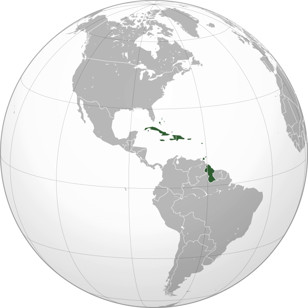Bermuda and the Turks and Caicos Islands, which are in the Atlantic Ocean, are associate members of the Caribbean Community. The Commonwealth of the Bahamas is also in the Atlantic and is a full member of the Caribbean Community. The organization called the Association of Caribbean States consists of almost every nation in the surrounding regions that lie on the Caribbean, plus El Salvador, which lies solely on the Pacific Ocean. According to the ACS, the total population of its member states is 227 million people.